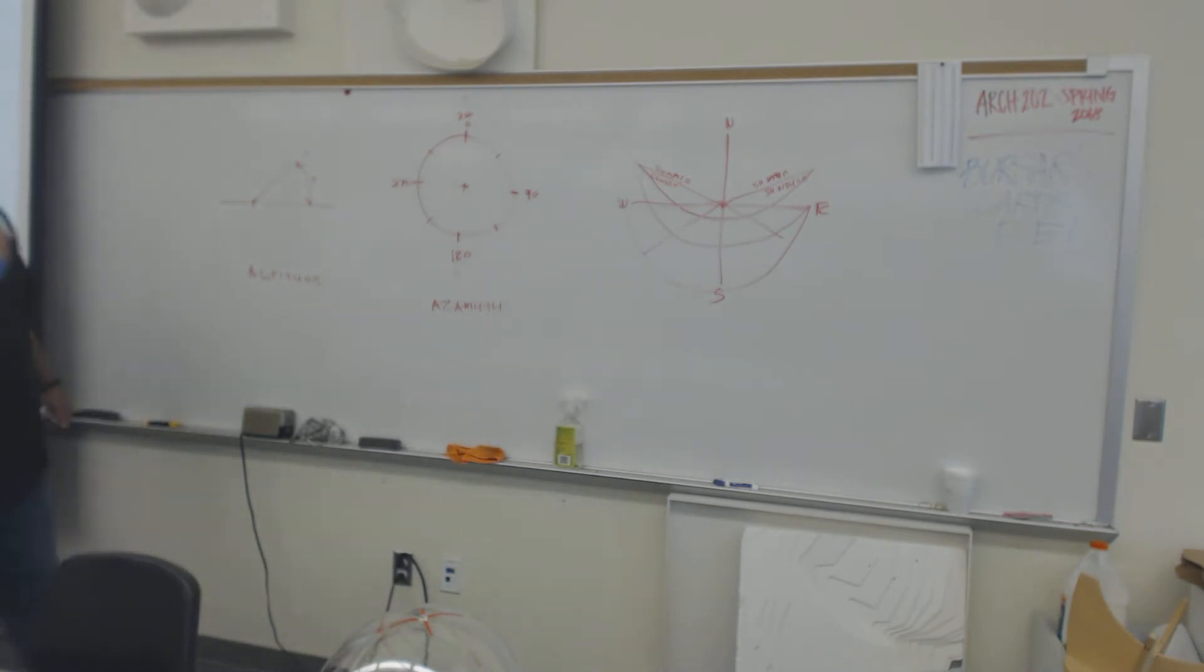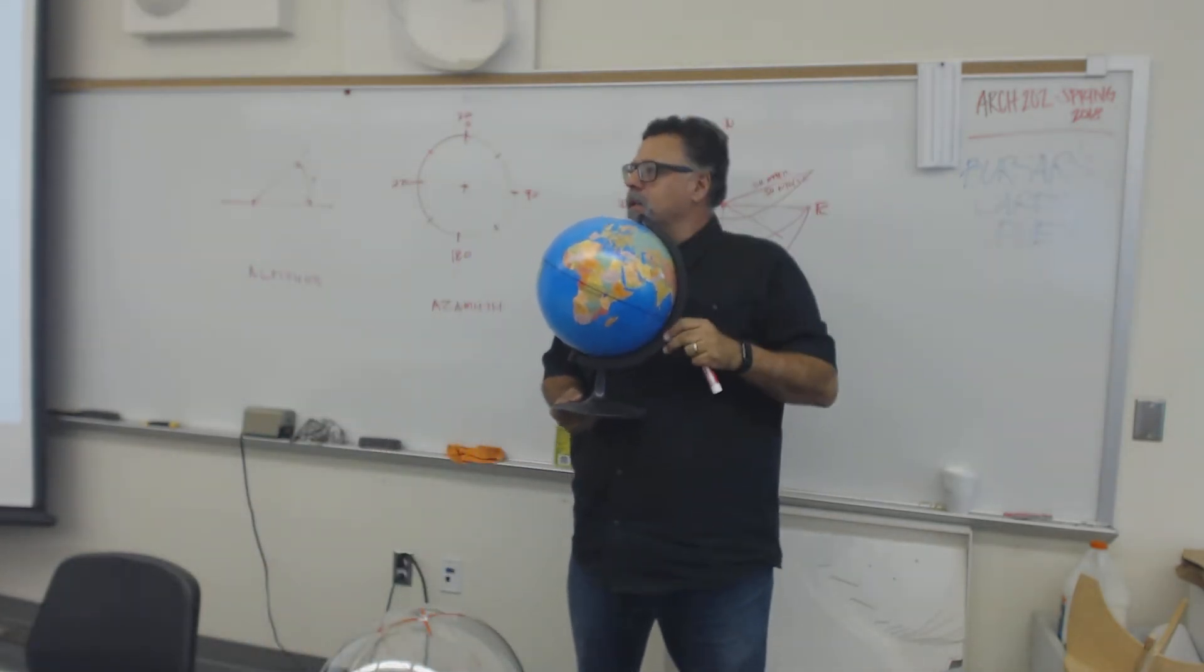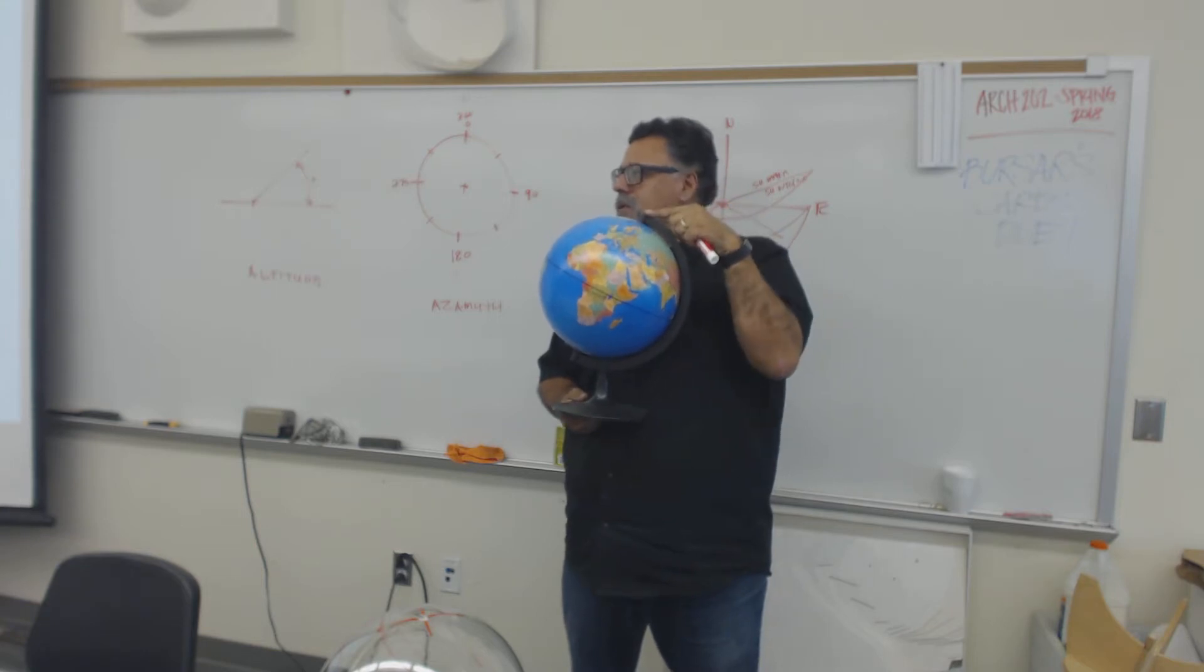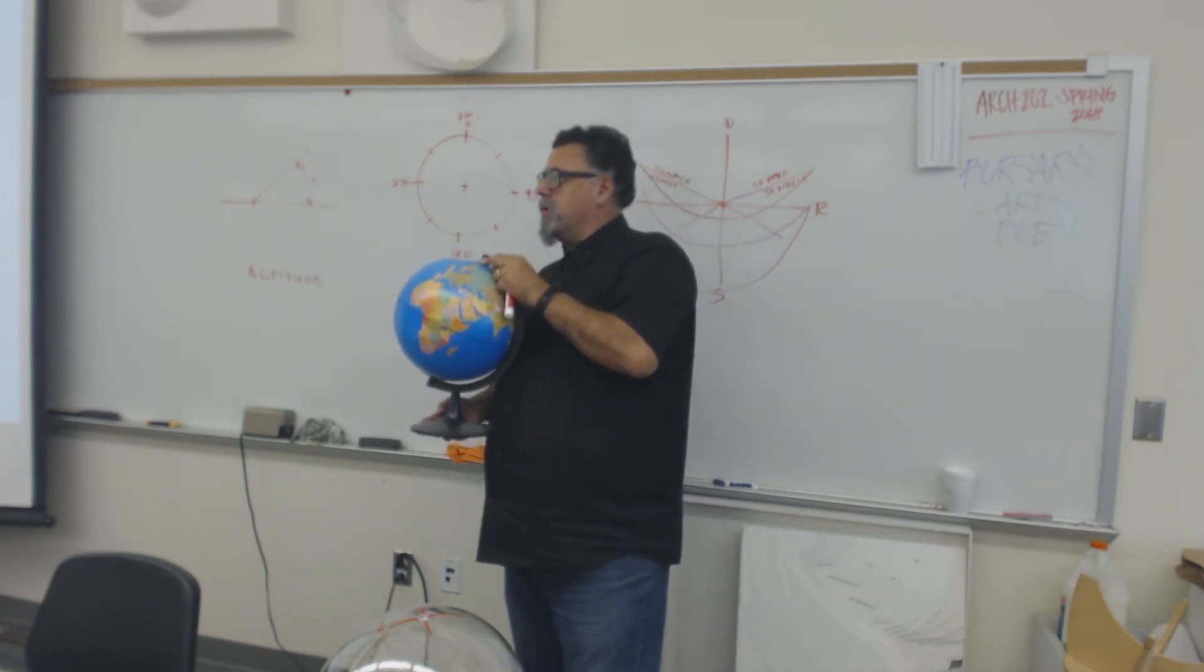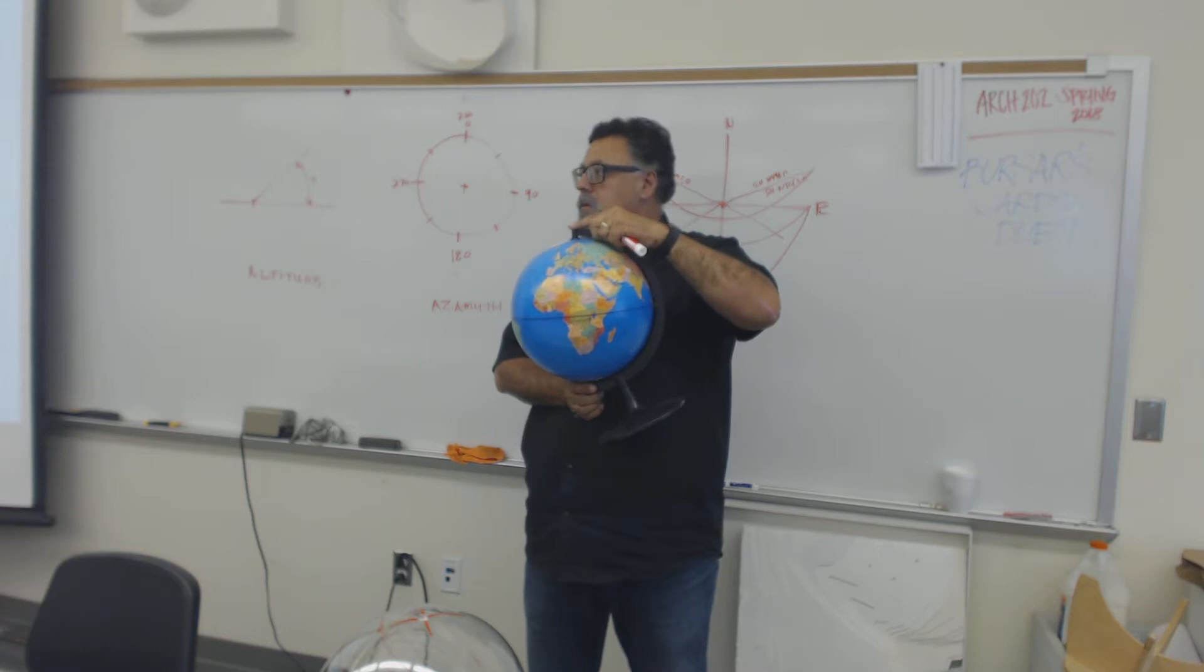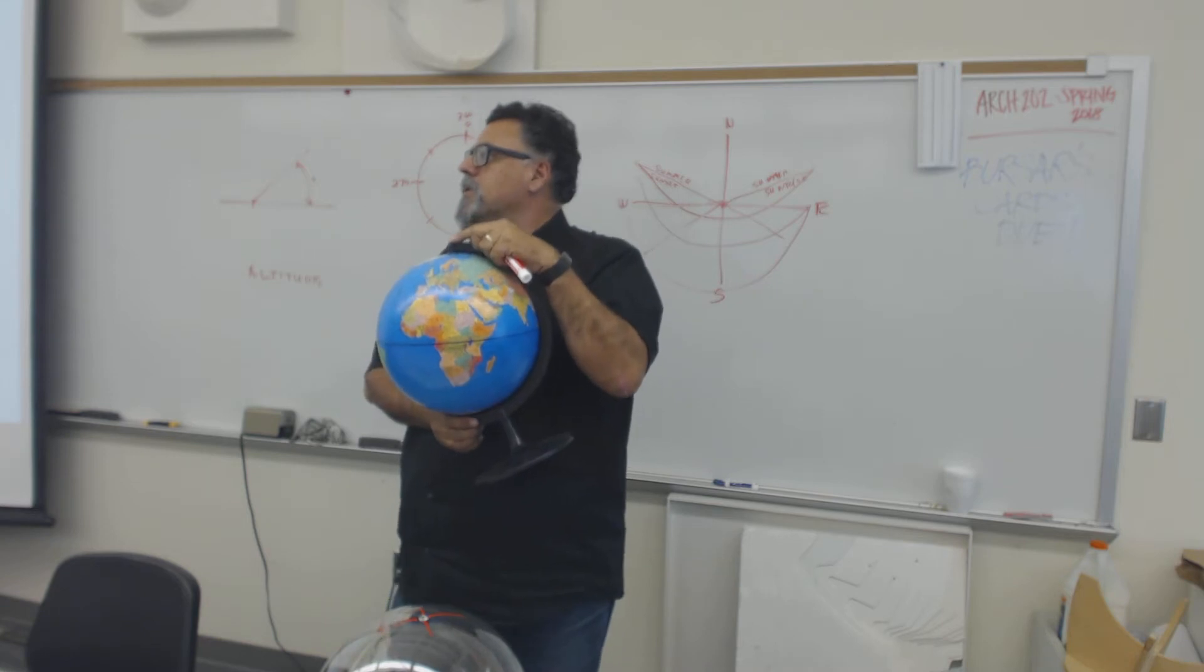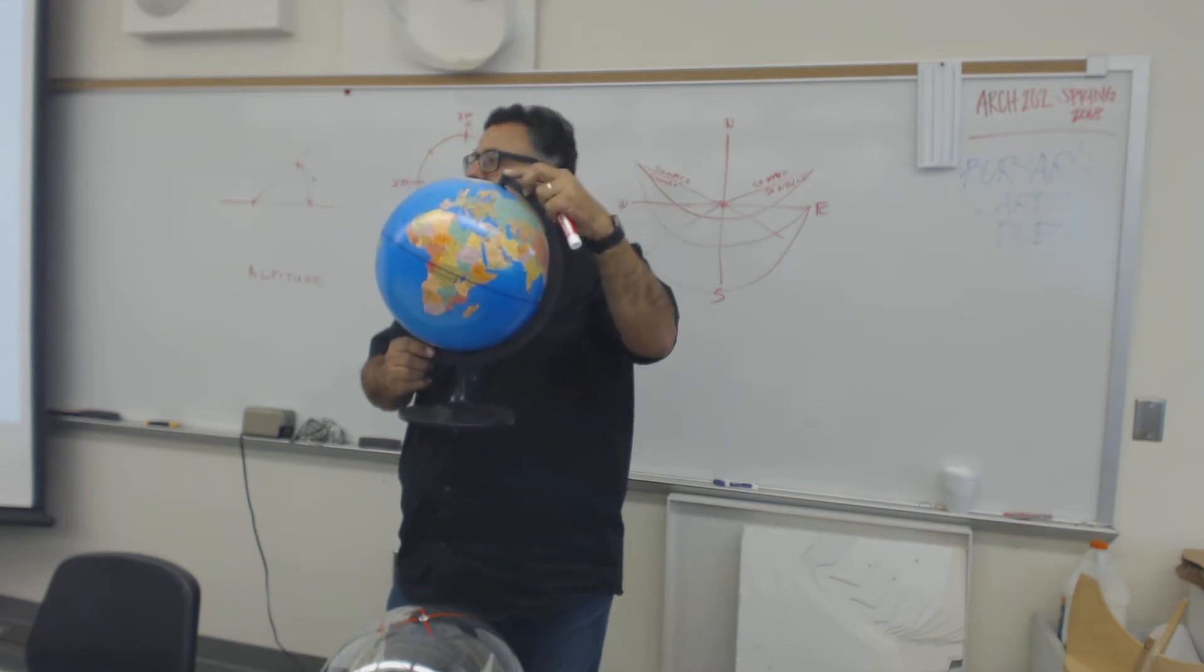So when you guys have all seen these globes, they have this angle that it's tilted back at. That's called the angle of declination. The angle of declination and the earth's orbit is what causes our seasons. And that's what causes the length of day to be greater or shorter. If the polar axes were straight up and down, every day of the year would be 24 hours. But how many hours of daylight would we have? 12 hours. If it was straight up and down.